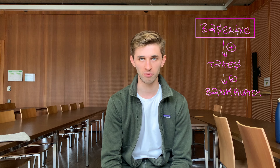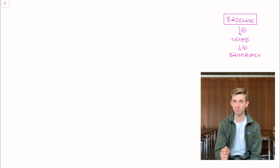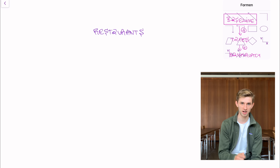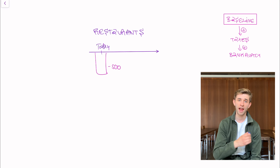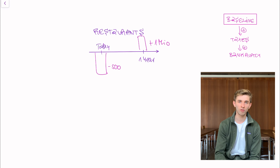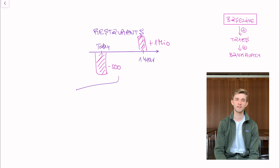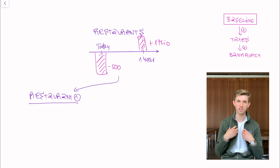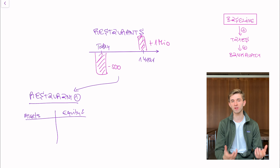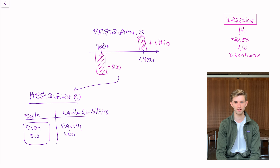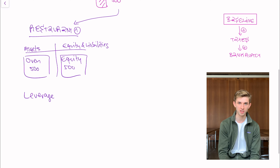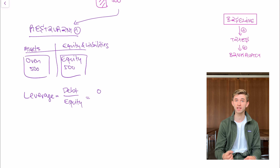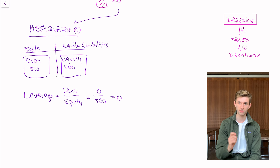Here's the baseline setting of Modigliani and Miller. They think about two companies — in our example, two pizza restaurants. They need to buy a pizza oven today for 500,000 euros, and over the years they sell pizzas and make a revenue of 1 million euros. Restaurant one is fully financed with equity. On the balance sheet we have the 500,000 pizza oven on the left and 500,000 in equity on the right. Leverage is defined as debt over equity — in our case, zero debt and 500,000 equity, so leverage is zero.